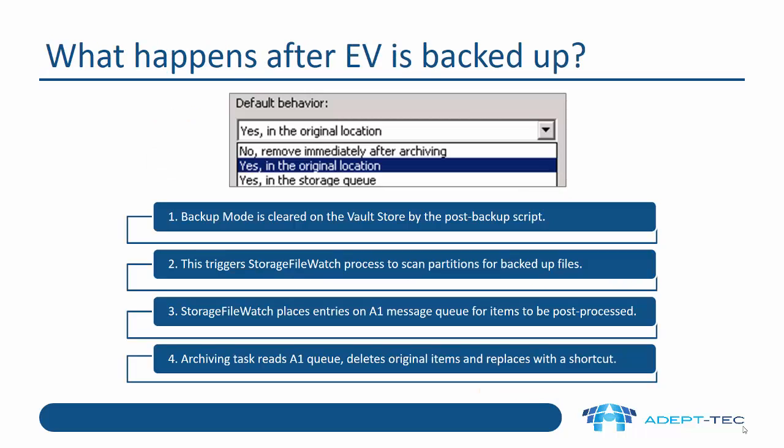Looking at the options: the new option in Enterprise Vault 11 is 'yes in the storage queue,' while 'yes in original location' is how it worked in Enterprise Vault 10. If we use 'yes in original location,' backup mode is cleared on the Vault Store by a post-backup script, triggering a process called Storage Firewatch, which scans partitions for backed-up files. Storage Firewatch then places entries on the A1 message queue for items to be post-processed. An archiving task reads the A1 queue, deletes the original items, and replaces them with a shortcut — that's what we call post-processing.